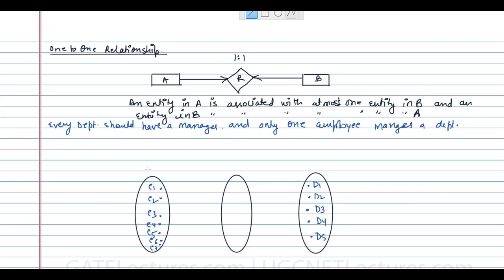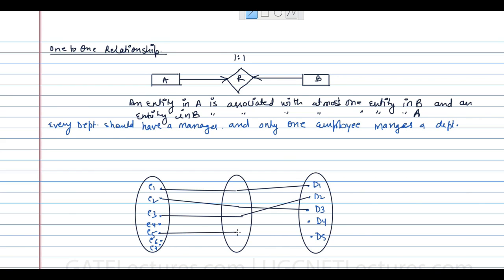Every department should have a manager, but only one employee manages a department. 'At most' means the maximum is one, but it can be less. For example: e1 manages d1, e2 manages d3, e3 manages d2, e5 manages d5, and e7 manages d4. Every department has exactly one manager, and no department has more than one managing employee. The relationship here is 'manages'.